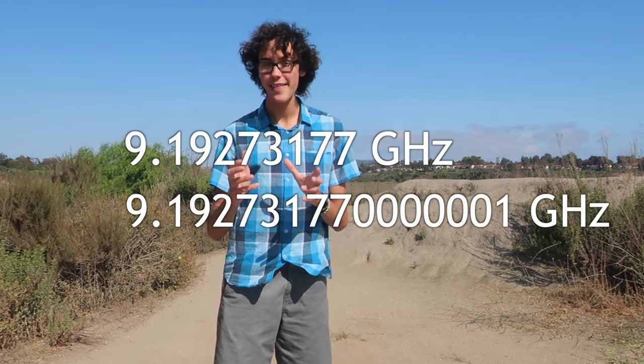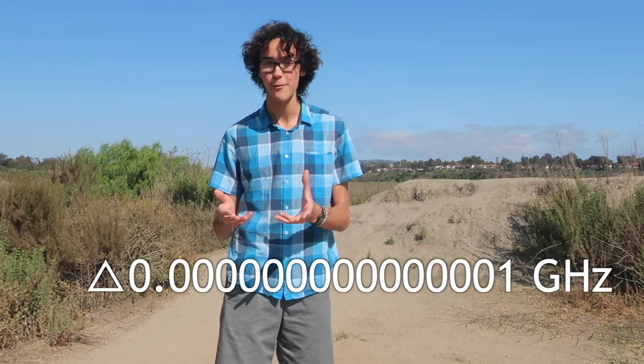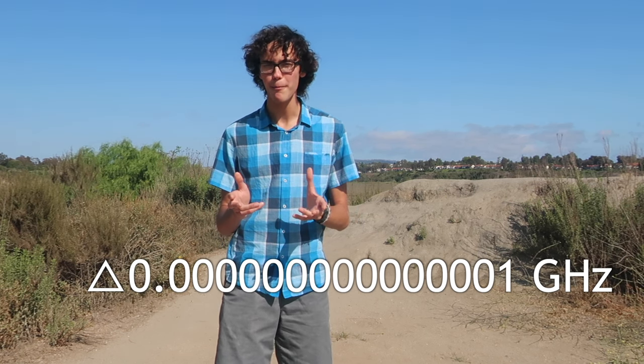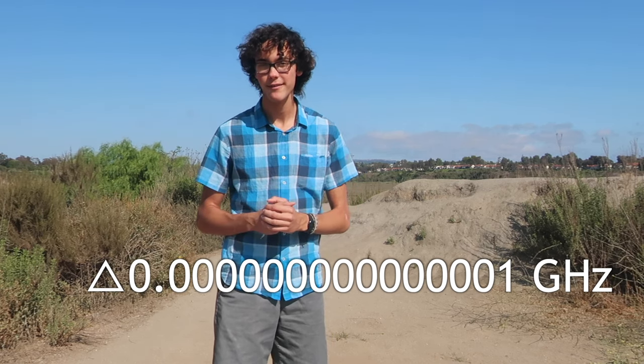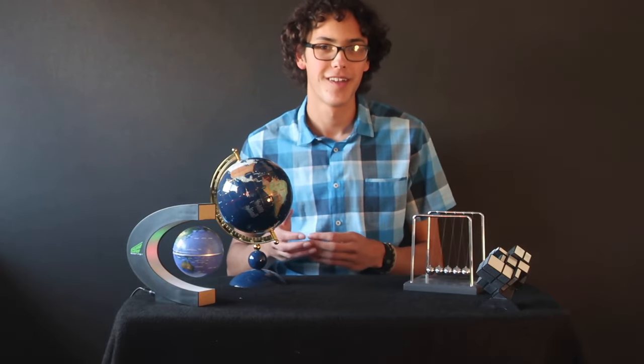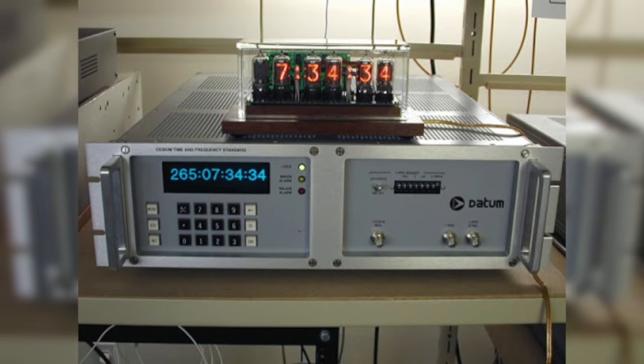And something fascinating about this is how incredibly sensitive changes to the microwave frequency are. If the microwave frequency so much as changes from this to this, that's enough to cause the atoms not to hit the detector, so a little jolt of electricity will have to be sent to the quartz to correct it. That is such a mind-bogglingly small number. But that's why atomic clocks are so accurate. They're so sensitive. This is how the world keeps time. It's kind of incredible. And at this point, you might be wondering, why do we even need such accurate clocks?